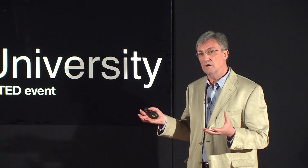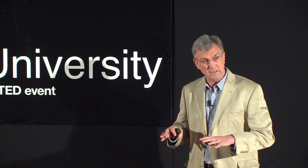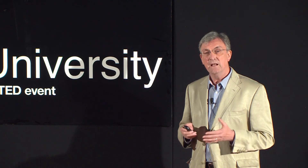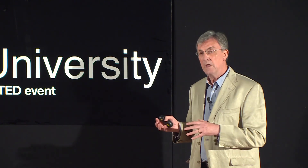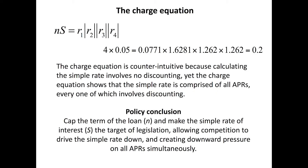So what are we going to do about it? We have legislation that tells people to concentrate on one APR, but actually there's a whole bundle of them — and ideally we should be pressing down on all of them at once. Let's go back to that new equation and make another new one: we rearrange it and insert the formula for the simple rate of interest. And what we find is this: N, the term of the loan — say four years — times the simple rate, which was 5%, equals the product of every APR.